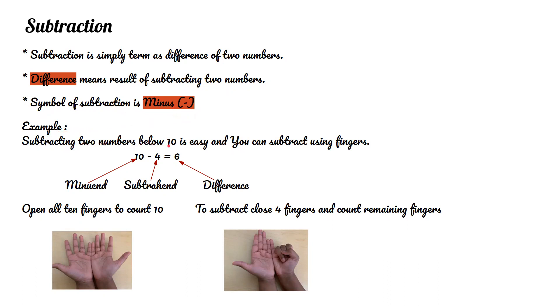Subtracting two numbers below 10 is easy and you can subtract using fingers. Here, 10 is the minuend, 4 is the subtrahend, and 6 is the difference. Open all 10 fingers to count 10. To subtract, close four fingers and count remaining fingers. Here we have four closed fingers and 1, 2, 3, 4, 5, 6 open fingers. So, 10 minus 4 equals 6.